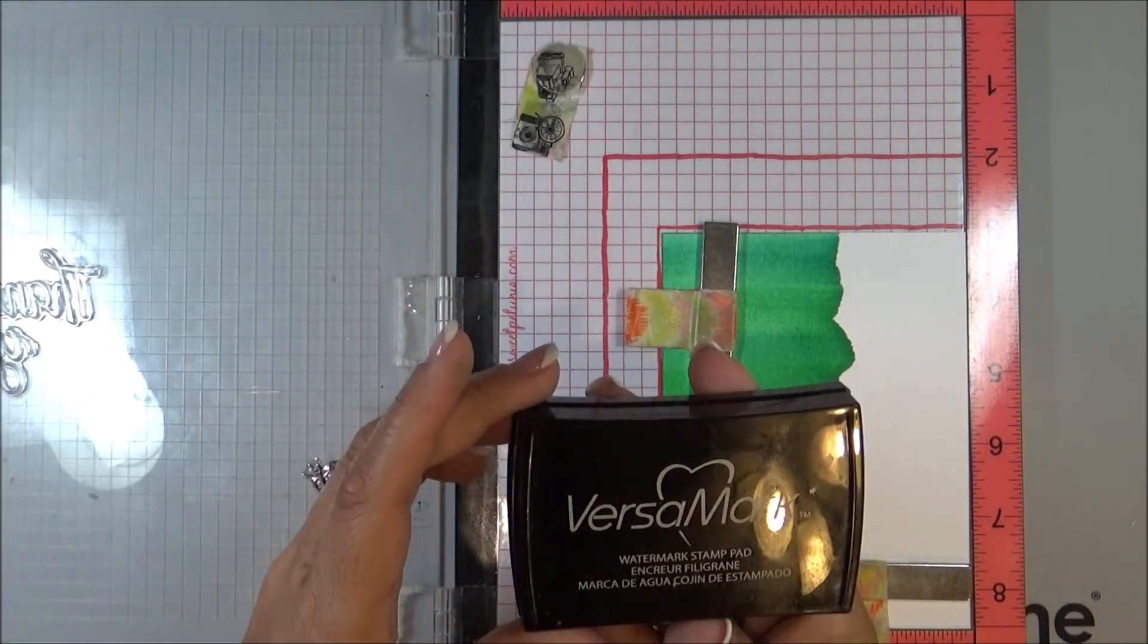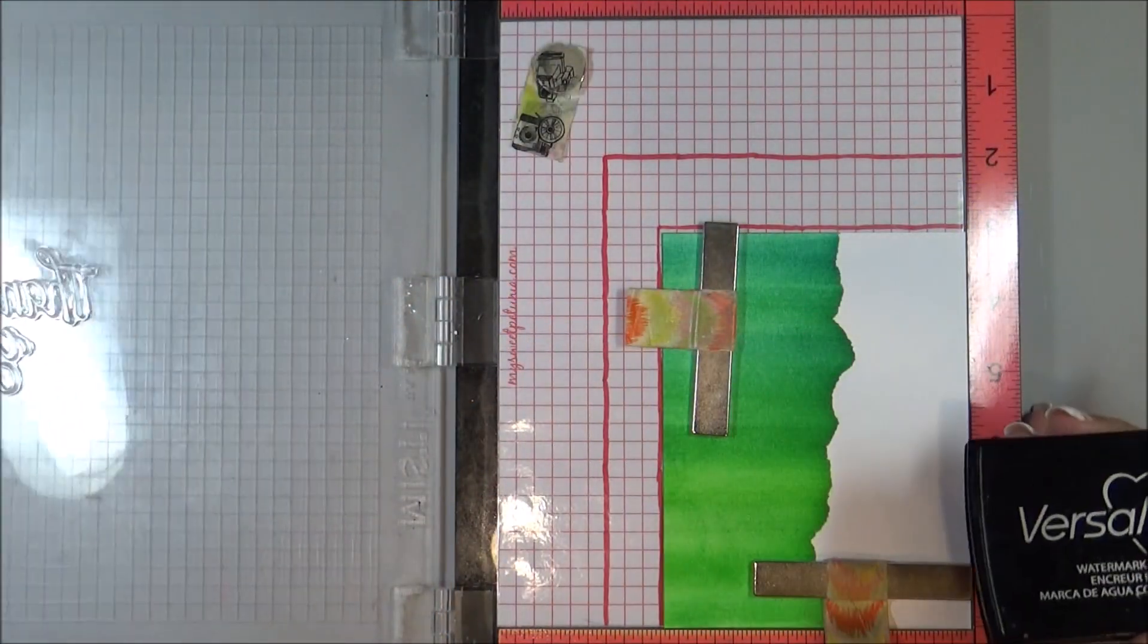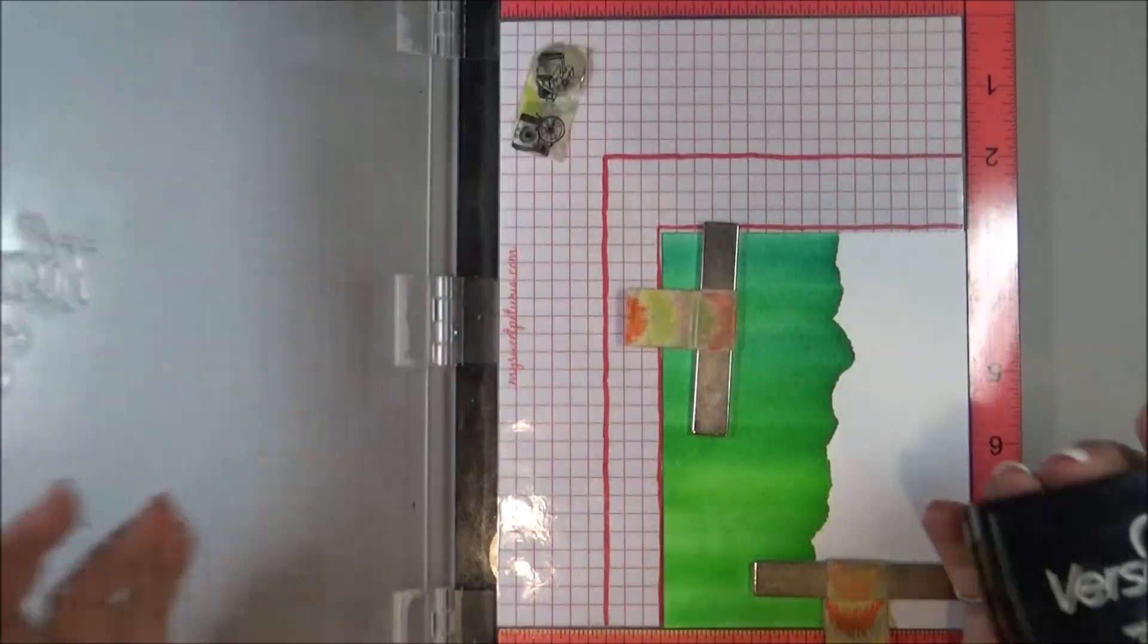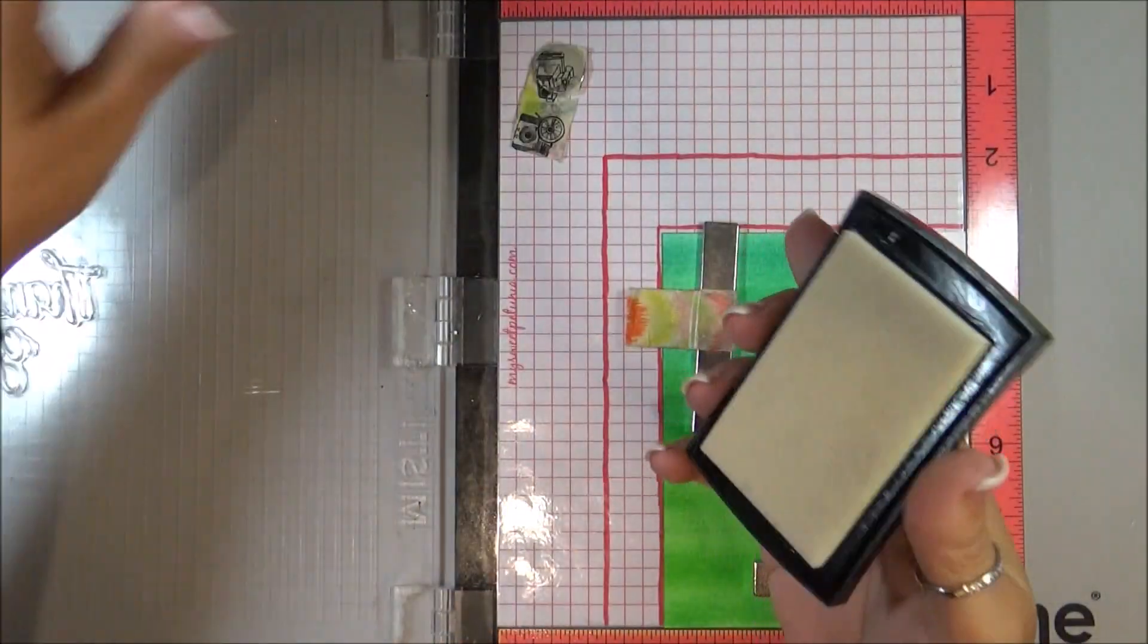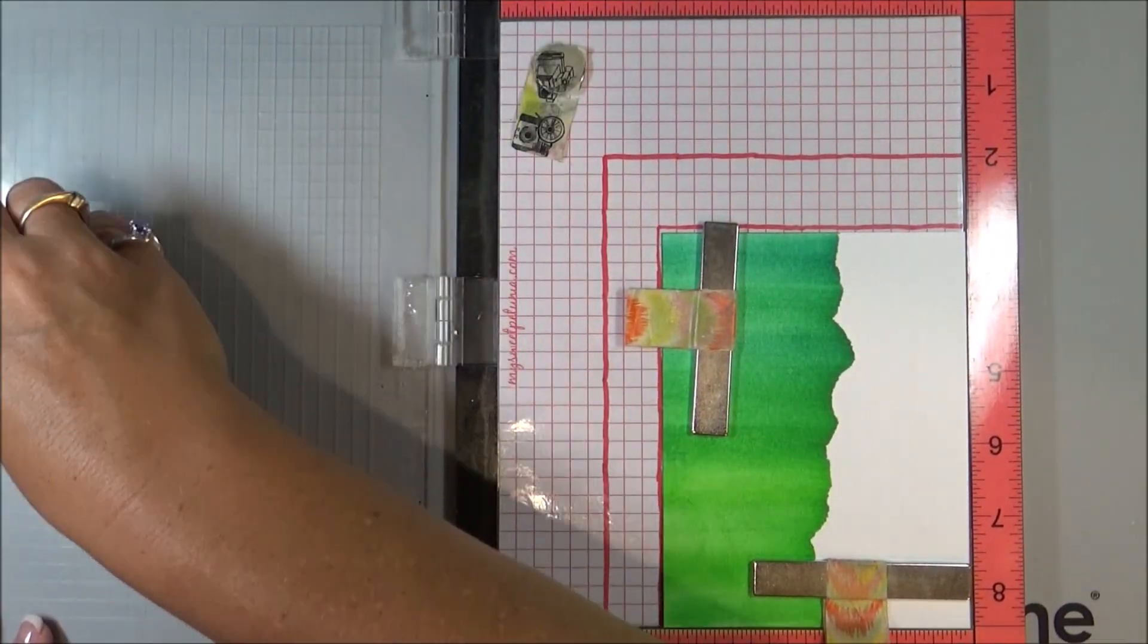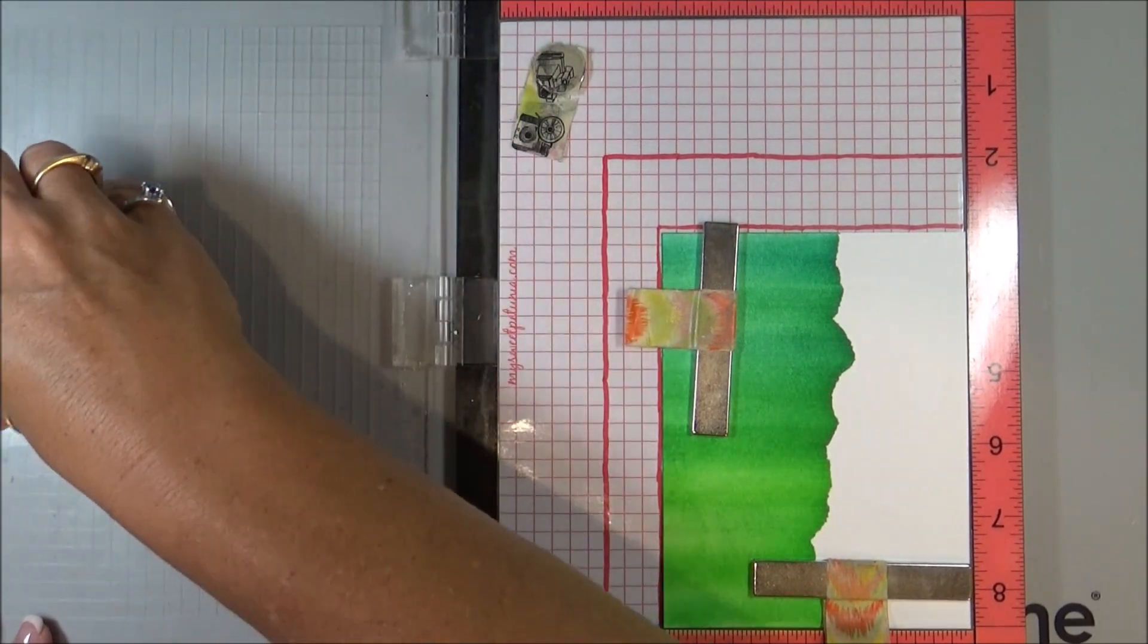So now I'm going to stamp the sentiment thank you using my MISTI with some Versamark, and then I'm also going to emboss that with the gold embossing powder.